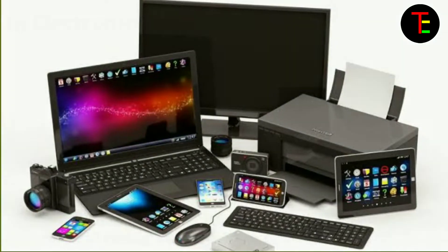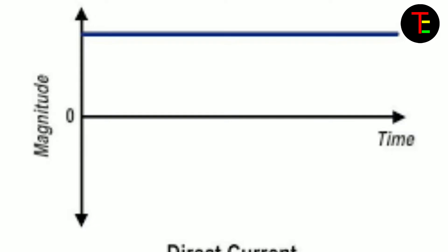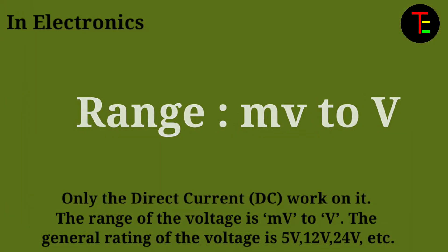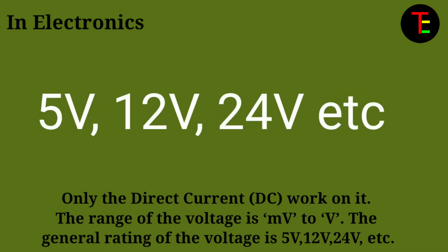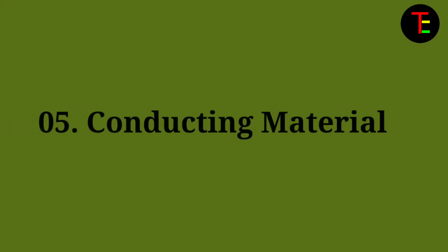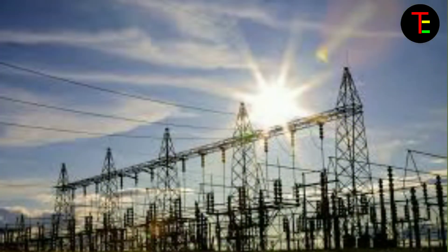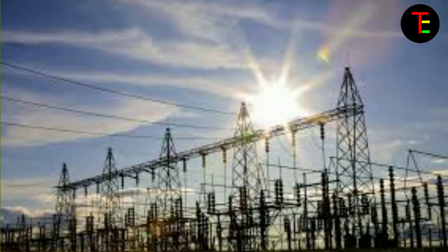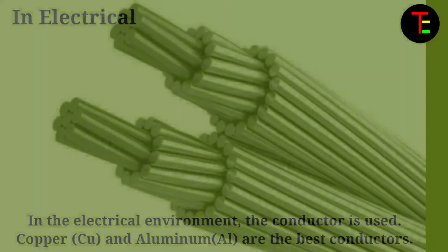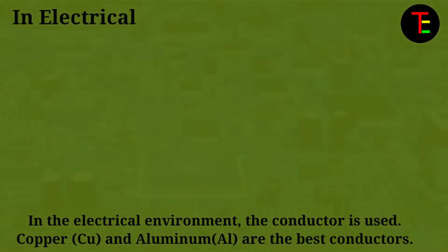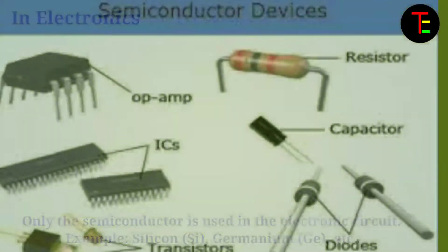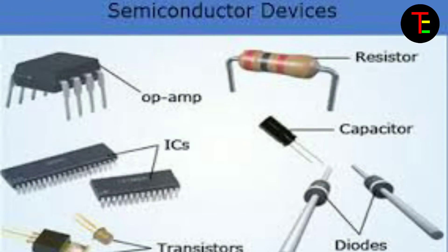But in electronics, only direct current works on it. The range of voltage is millivolt to 2 volt. The general rating of voltage is 5 volt, 12 volt, 24 volt etc. No.5 Conducting material: In the electrical environment, copper and aluminium are used as conductors. But in the electronics environment, only semiconductors are used in the electronic circuit.